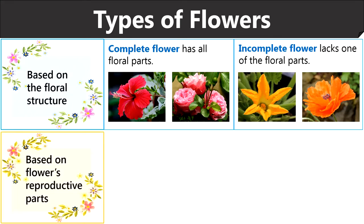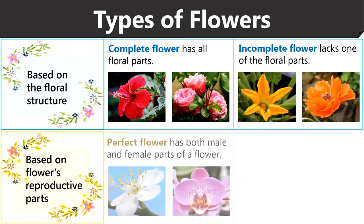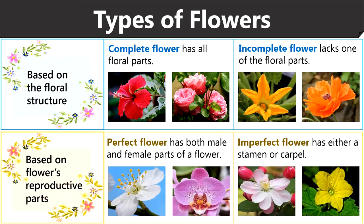Then a flower contains two reproductive structures in which stamens constitute the male reproductive part and carpels make up the female reproductive part. Based on the presence of stamens and carpels, flowers can be classified into two types. A perfect flower has both male and female parts. Cherry blossoms and orchid flowers are perfect flowers, and an imperfect flower has either a stamen or carpel, and begonia and squash flowers are the examples.